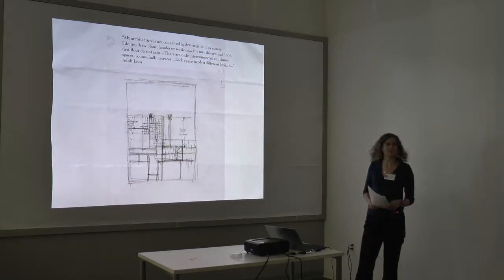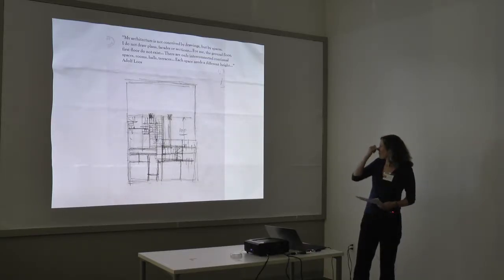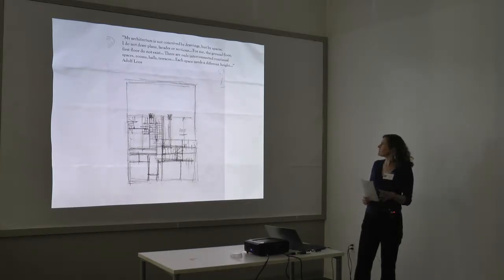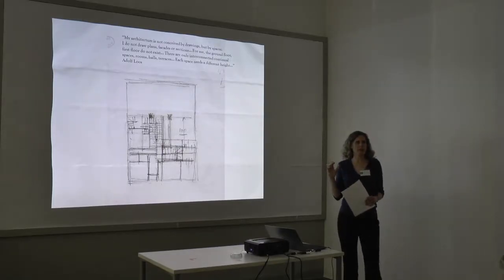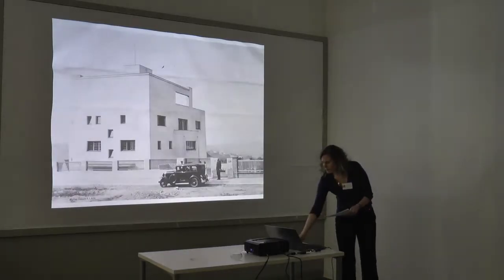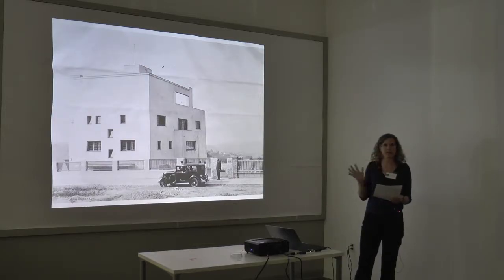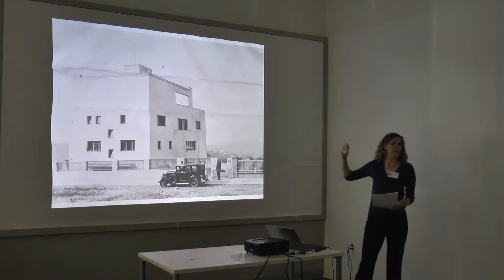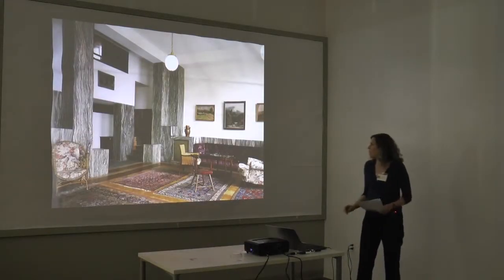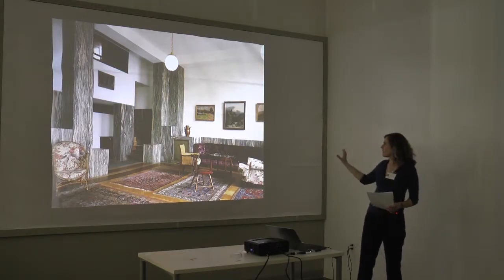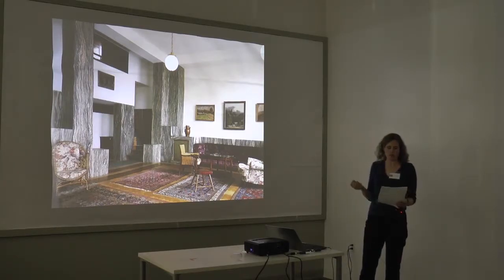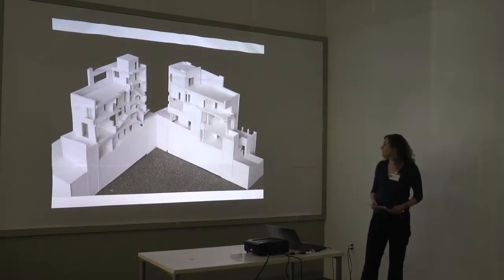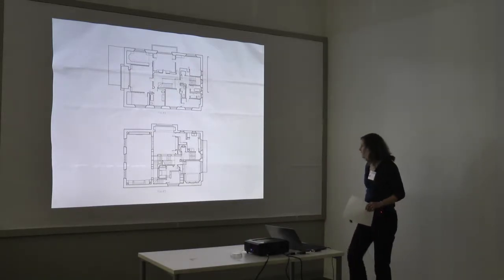This is a drawing by Adolf Loos — a sketch of the Müller House in Prague. He says he's not conceiving architecture as plans, facades, or sections, but as interconnected spaces. Loos was clearly a spatial thinker. The house, built around 1930, is known for this very pared-down exterior that serves as a mask to the building, concealing highly spatially complex interiors with rich material treatment.